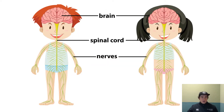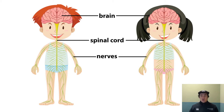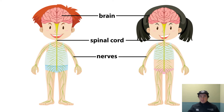Here's a very simple model of the structures of the nervous system. We have the brain and spinal cord, and then we have all of the nerves which relay messages back and forth to and from the brain and spinal cord. Compared to other systems, the main structures are quite simple.